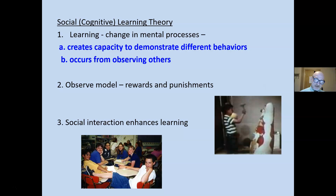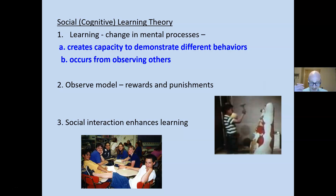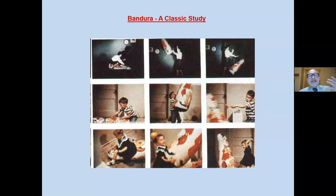Social cognitive learning theory is technically a behavioral learning theory. Learning here is a change in mental processes that creates the capacity to demonstrate different behaviors, occurring as a result of observing others. Mary watches Sam; Mary sees Sam get punished for a behavior; Mary avoids that behavior. We observe models and see the rewards and punishments, thinking that if we act in a similar way we will be rewarded or punished. One important idea is that social interaction enhances learning. The classic study is the Bandura study, where children observed aggressive adults and tended to react more aggressively.